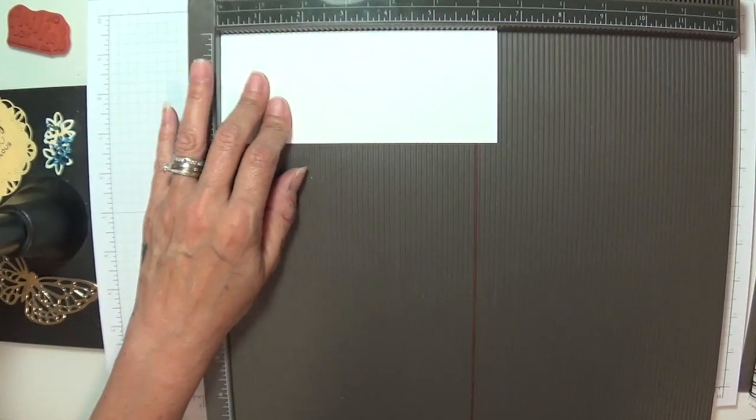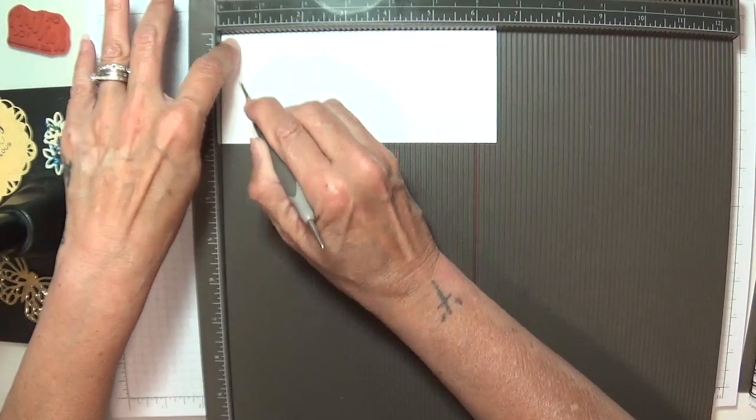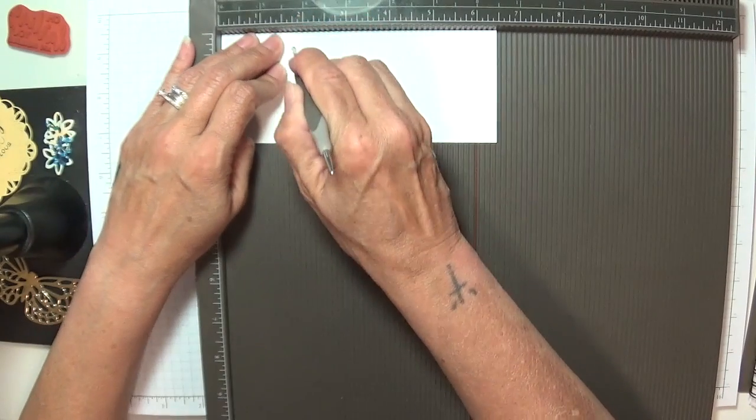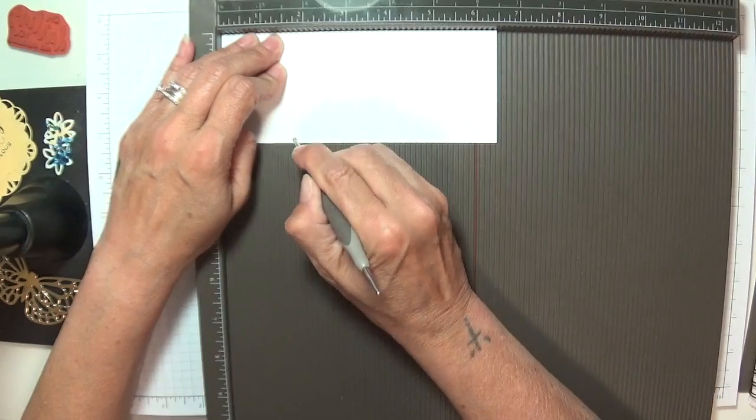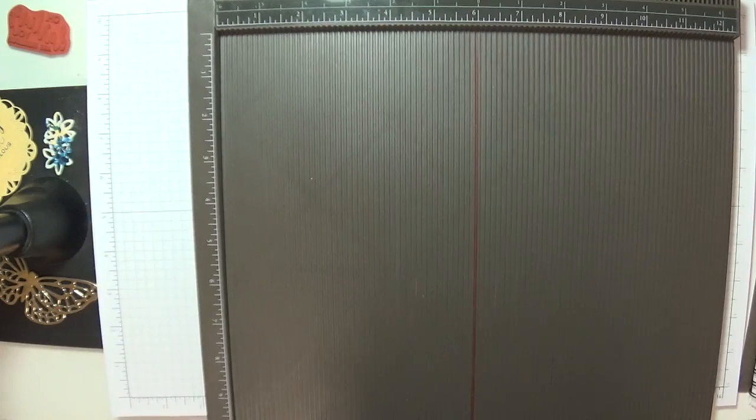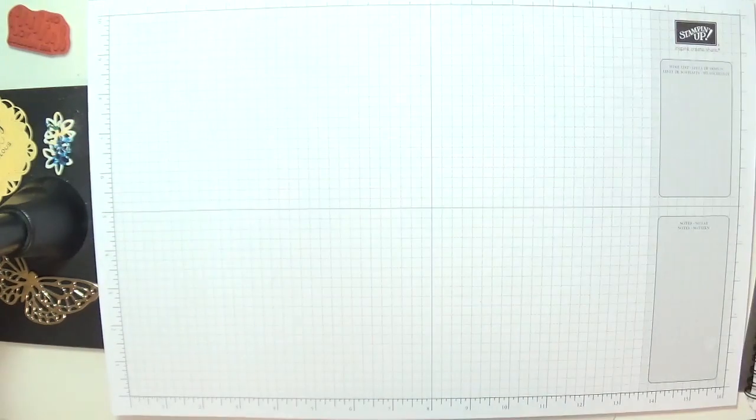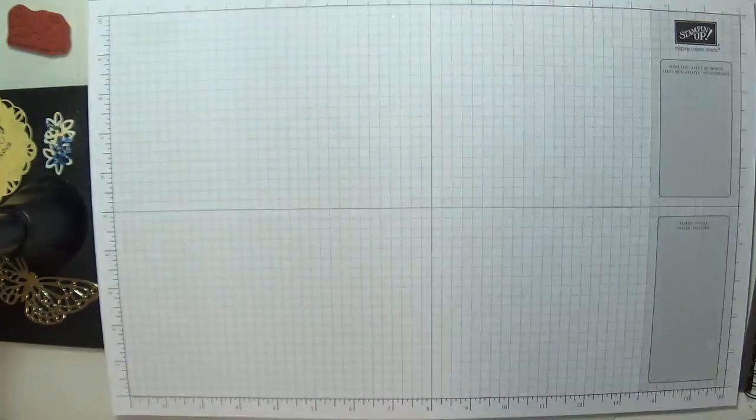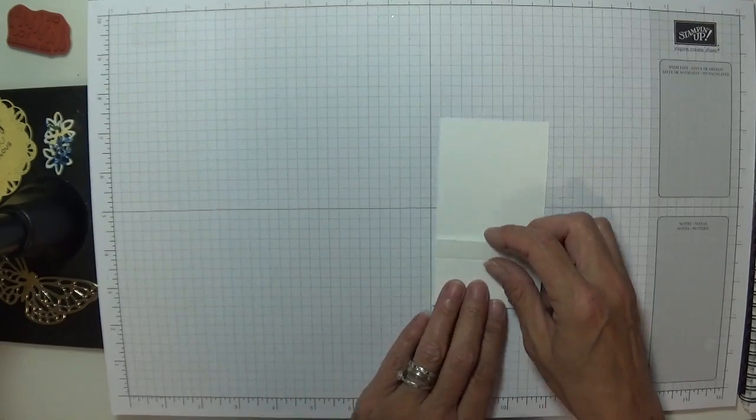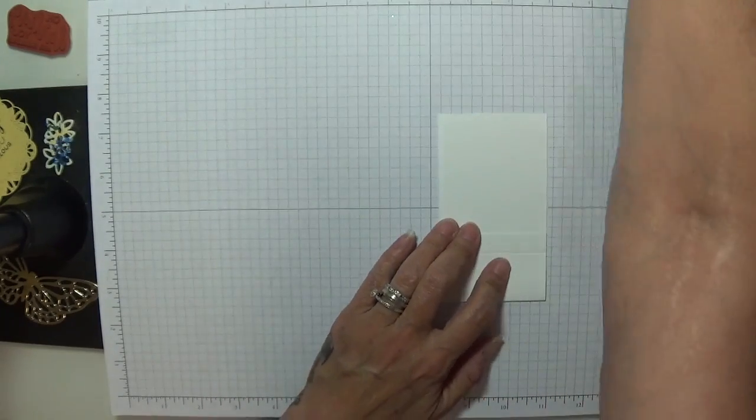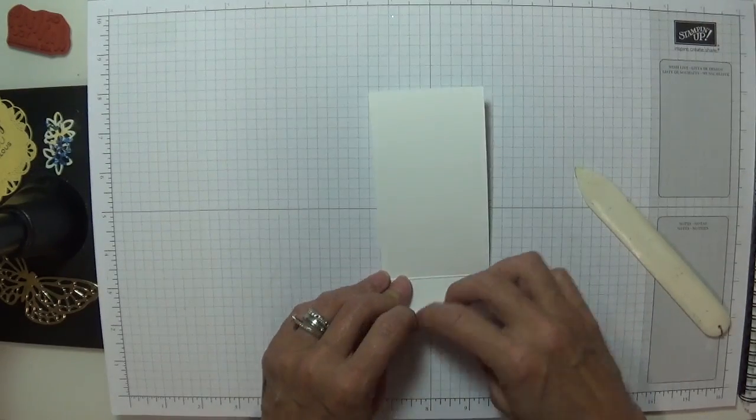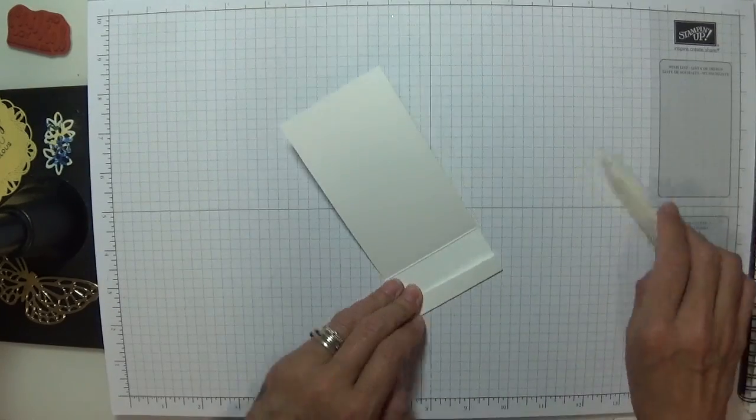And this one, you're going to score at half an inch and one and three quarters. And that's it. So, pop that back. And we're going to carefully burnish our score lines, making sure they meet right up against each other.